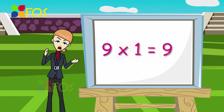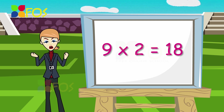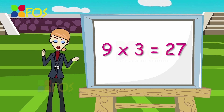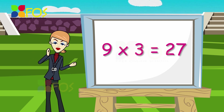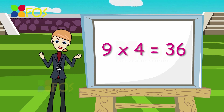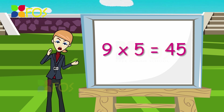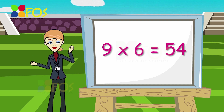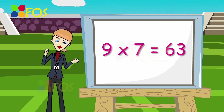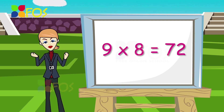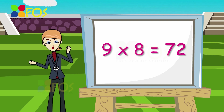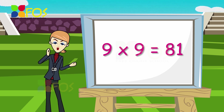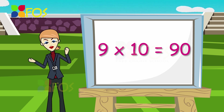9 1s are 9, 9 2s are 18, 9 3s are 27, 9 4s are 36, 9 5s are 45, 9 6s are 54, 9 7s are 63, 9 8s are 72, 9 9s are 81, 9 10s are 90.